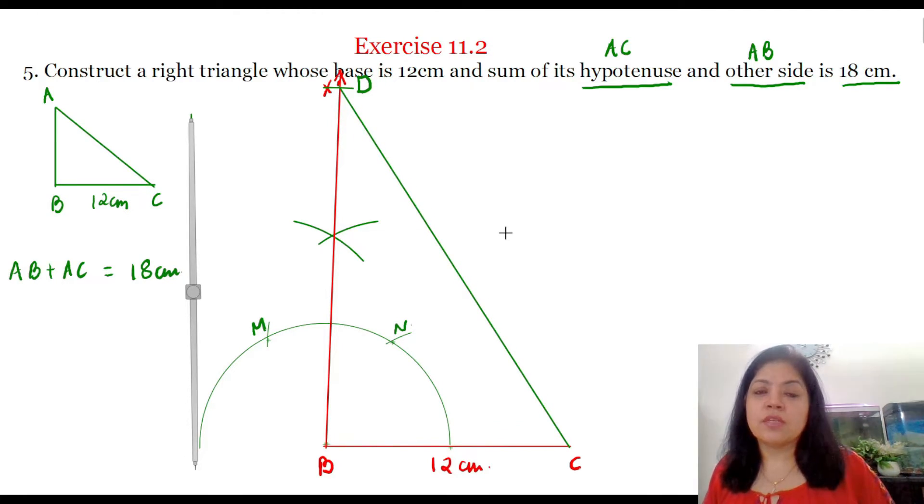Now the third vertex of the triangle ABC that is A will lie somewhere on this ray BX. To find this point on the ray BX, we will have to draw a perpendicular bisector of CD and the point where this perpendicular bisector will intersect this ray BX will be the point A that is the vertex A of the triangle ABC.